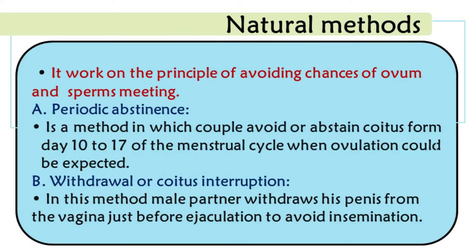Natural methods work on the principle of avoiding chances of ovum and sperm meeting. First, periodic abstinence: a method in which the couple avoids coitus (sexual intercourse) from days 10 to 17 of the menstrual cycle, when ovulation is expected.